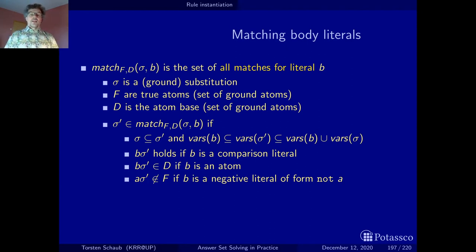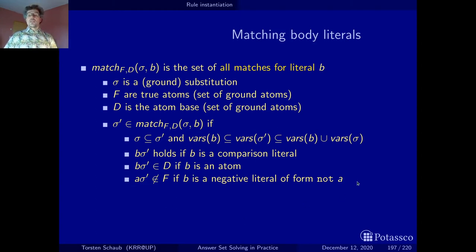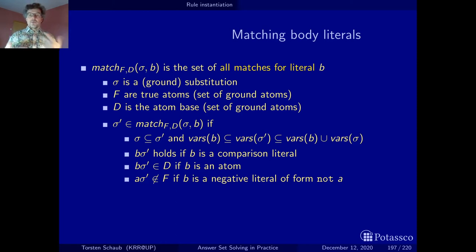For a negative body literal — something like 'not a' — we just do a sanity check, making sure the actual atom once we apply our match does not belong to the true facts. If this is the case, not a can still potentially be true, so we leave it in — this is a valid match for a negative body literal. This was pretty technical, so let's look at an example to make it clearer.